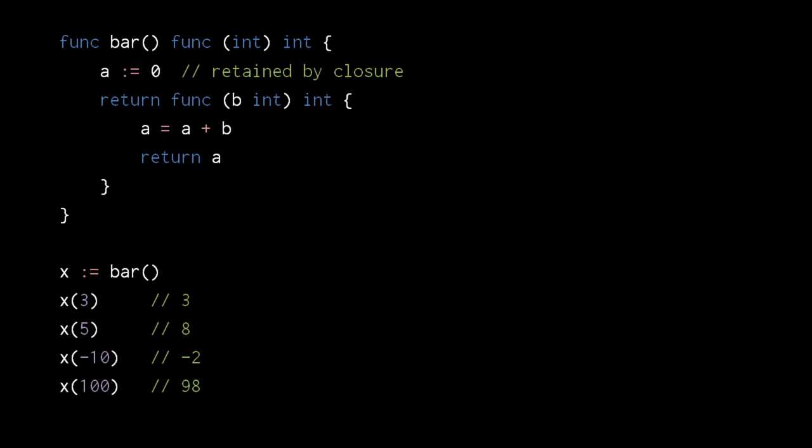Like in JavaScript, an inner function can retain access to local variables from enclosing scopes. Here for example, bar returns a function which retains access to the local variable a of bar. So when we invoke this returned function multiple times, the same variable a is used for each call. If we call bar a second time, we get back a function with the same code but with a separate variable a. So calls to x and y here are using a different variable a.